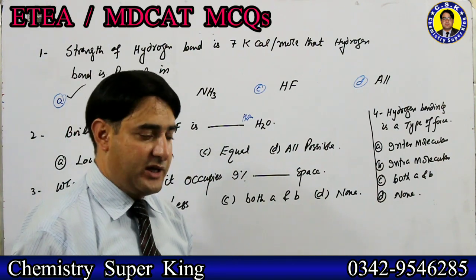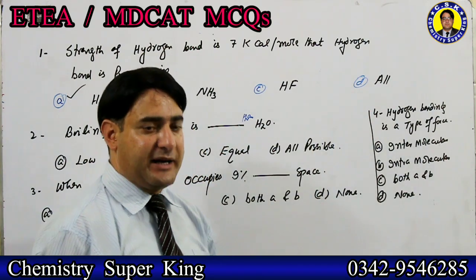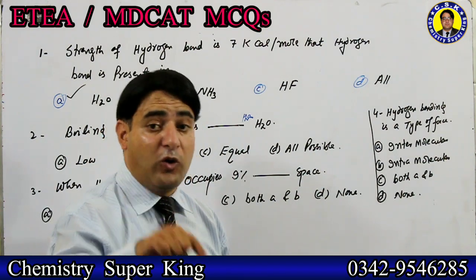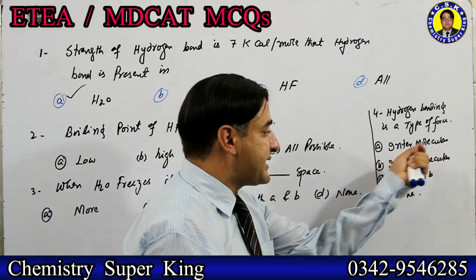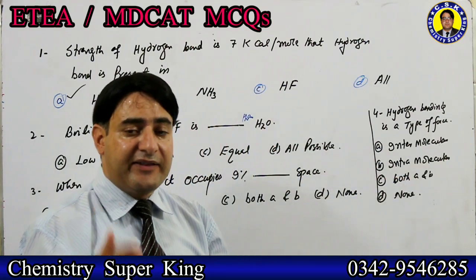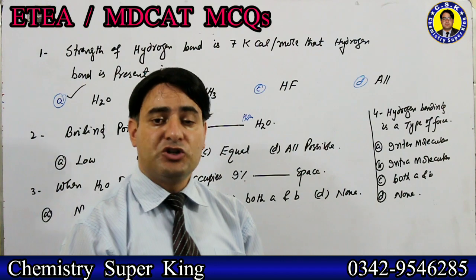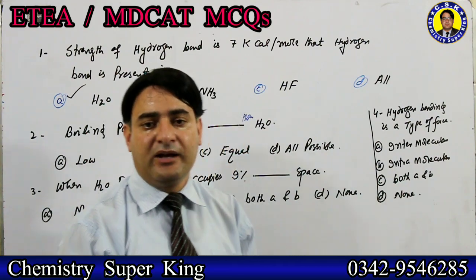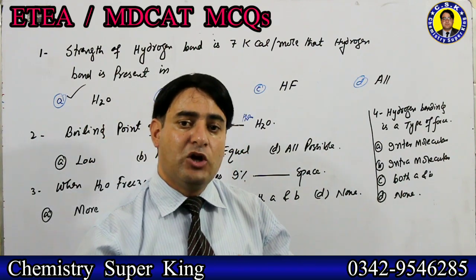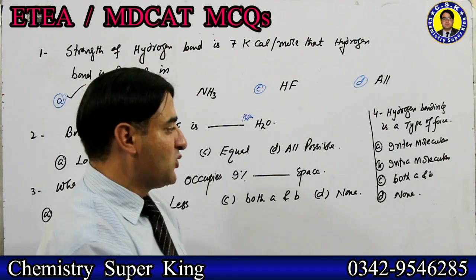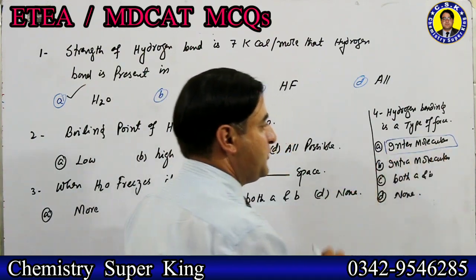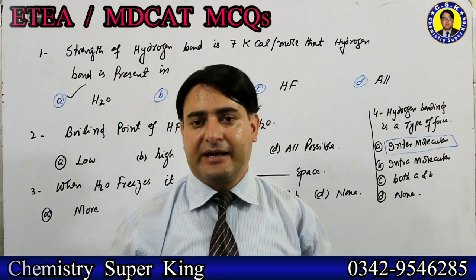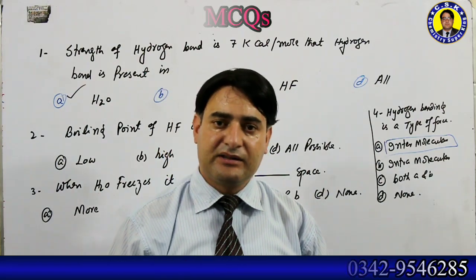MCQ: hydrogen bonding is a type of which force? Remember — hydrogen bonding can be intermolecular or intramolecular, but both types are a type of intermolecular forces. So the answer is intermolecular forces. That was today's session. Subscribe to the channel and press the bell icon so you receive notifications for upcoming sessions. The next session will cover evidences and applications of hydrogen bonding. Take care of yourself and your family — thank you very much.